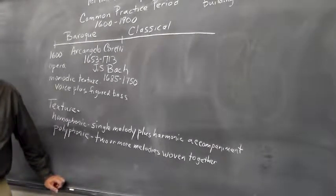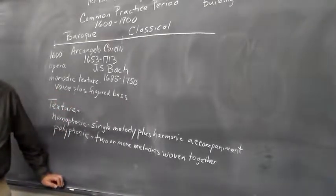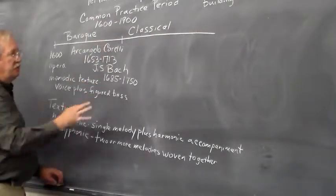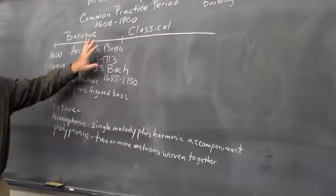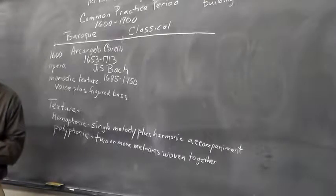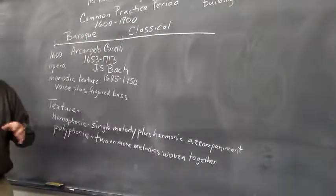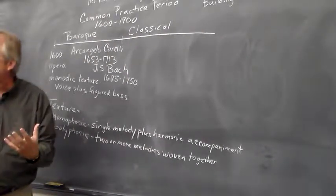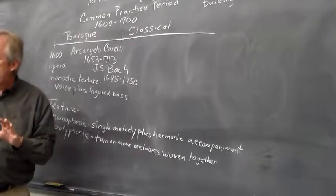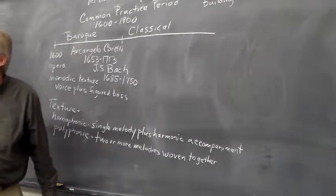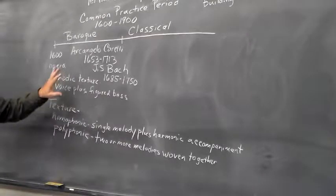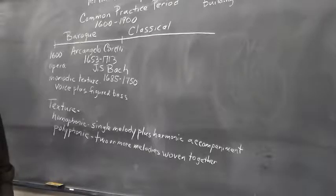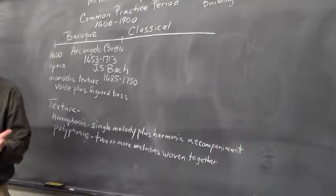Bach's music is an extremely great example of polyphonic writing, and he was the great master of the fugue, which is one of the most important types of polyphonic forms. The beginning of the Baroque was an era that rejected multiple voices expressing a text because it made it harder to understand the words. The idea of monody was that music would express the meaning of the text very clearly — a single melody that expressed all the emotions of the text.